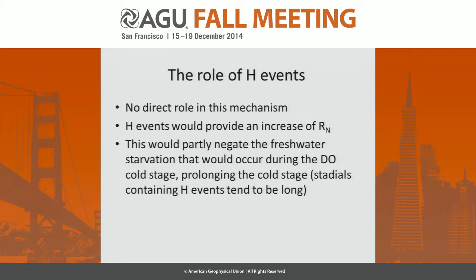Heinrich events have no direct role in this mechanism, which I thought would come as a shock, but since the first three talks also suggested Heinrich events don't have much to do with Dansgaard-Oeschger events, I'm just adding to an open goal. What Heinrich events would do is increase the flux directly into the Atlantic, negating the freshwater starvation during the cold stage, thus prolonging it — and stadials containing H events do tend to be long. I rather suspect Heinrich events have been a gigantic red herring that delayed our understanding of Dansgaard-Oeschger events for several years.